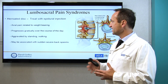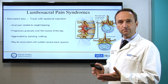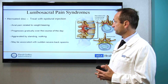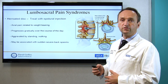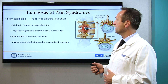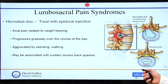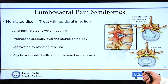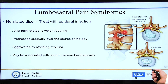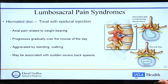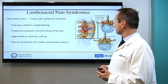Our specialty, in addition to conservative management, is offering image-guided treatment and injections. Let me go through a few of the most typical or most frequent problems patients come with. One would be so-called lumbar sacral pain syndrome caused by a herniated disc. Here is a side view of the spinal column — in between the vertebrae you have a so-called disc. The disc, over time and by aging — as well as sometimes by genetic problems — can become diseased.